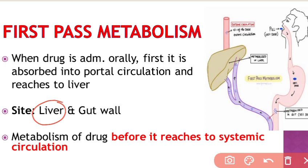Apart from the liver, first pass metabolism can also occur in the gut wall, vasculature, and lung. These are the other sites, but the major site for first pass metabolism is the liver.